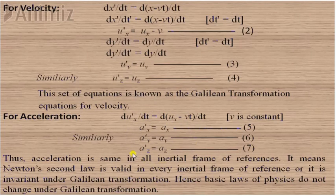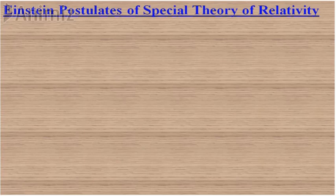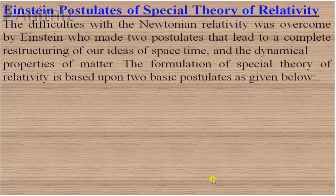Since Newton's second law F equals ma, and mass is constant and acceleration is invariant, Newton's second law is also invariant under Galilean transformation. We can say that Newton's second law is valid in every inertial frame of reference, and hence the basic laws of physics do not change under the Galilean transformation.